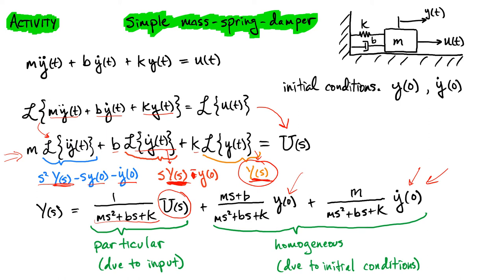And so one of the things that should kind of ring a bell from differential equations a couple semesters ago is the fact that you can separate the complete solution into something that is called the particular solution and something that is the homogeneous solution. The homogeneous solution is something that's due entirely to initial conditions.